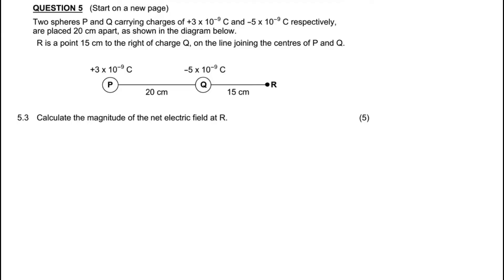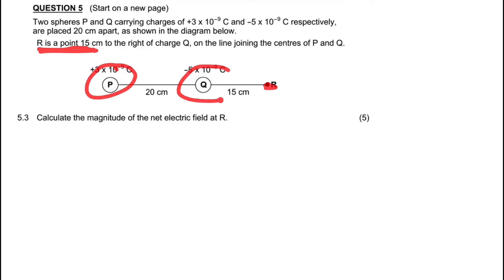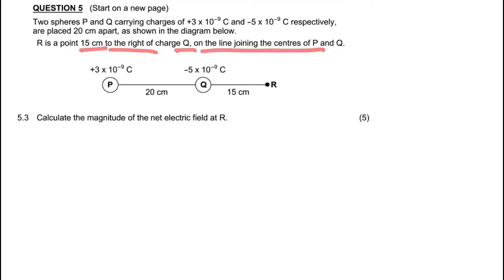This is an electrostatics problem. We're going to look at the electric field. It says sphere P and Q carry charges of positive 3×10⁻⁹ and negative 5×10⁻⁹ respectively, 20 meters apart as shown in the diagram. Point R is a point — not a charge — 15 centimeters to the right of Q, on the line joining the centers of P and Q.